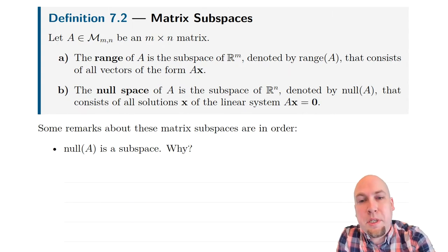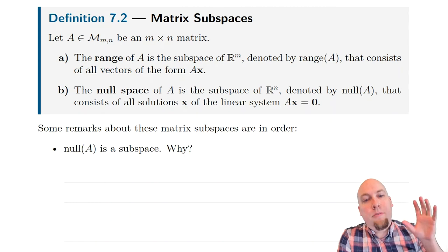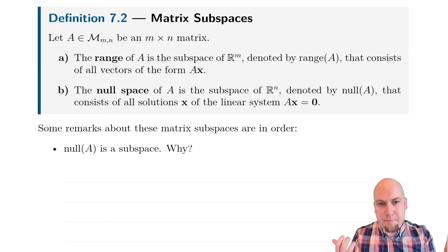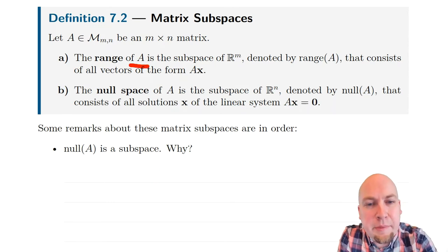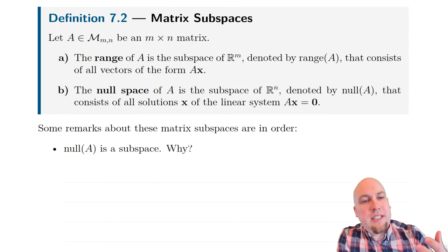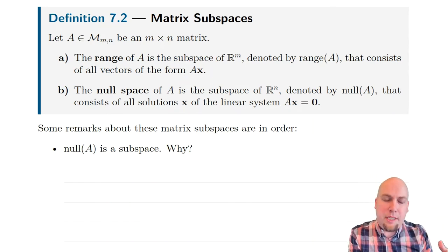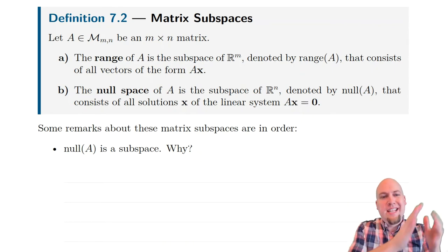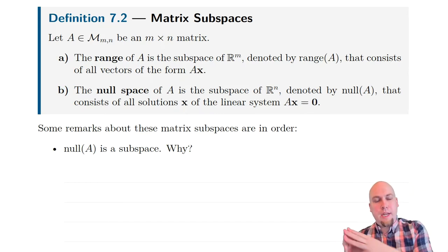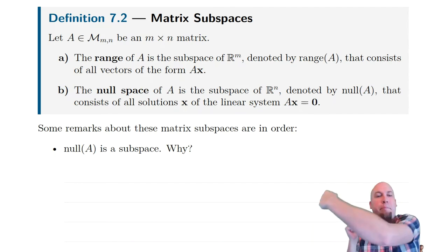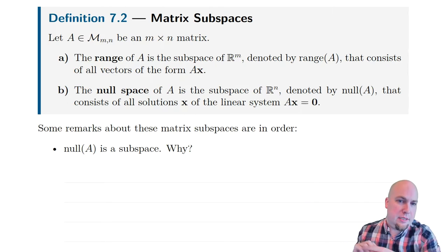The setup is you have some particular matrix A. The range of that matrix is the set of all vectors that are possible outputs upon matrix multiplication. So the range is the collection of all vectors of the form A times x, where x can be any input vector. Think of matrix A as a linear transformation sending x to Ax — then the range is the set of all output vectors, all things that x can possibly be mapped to.